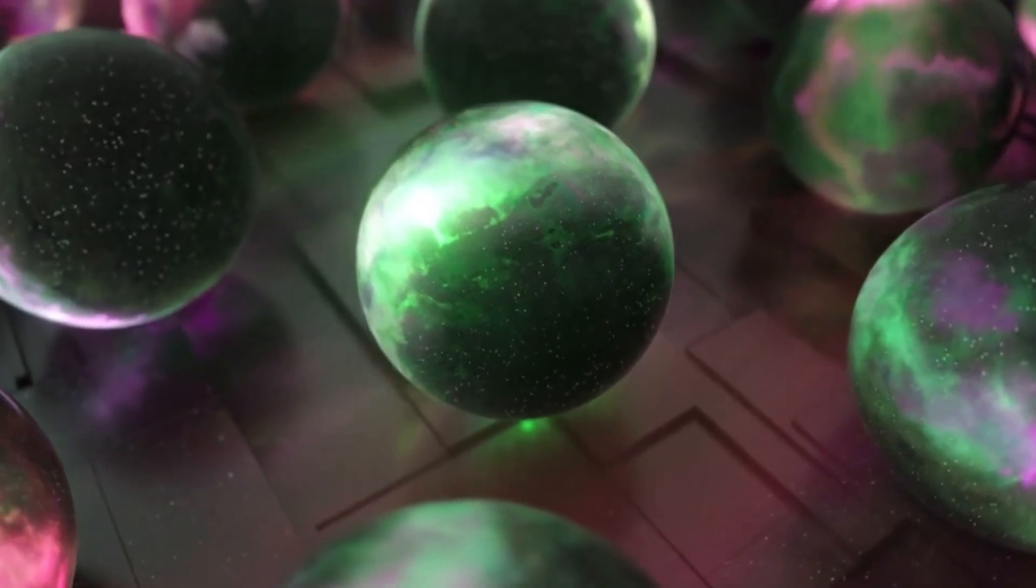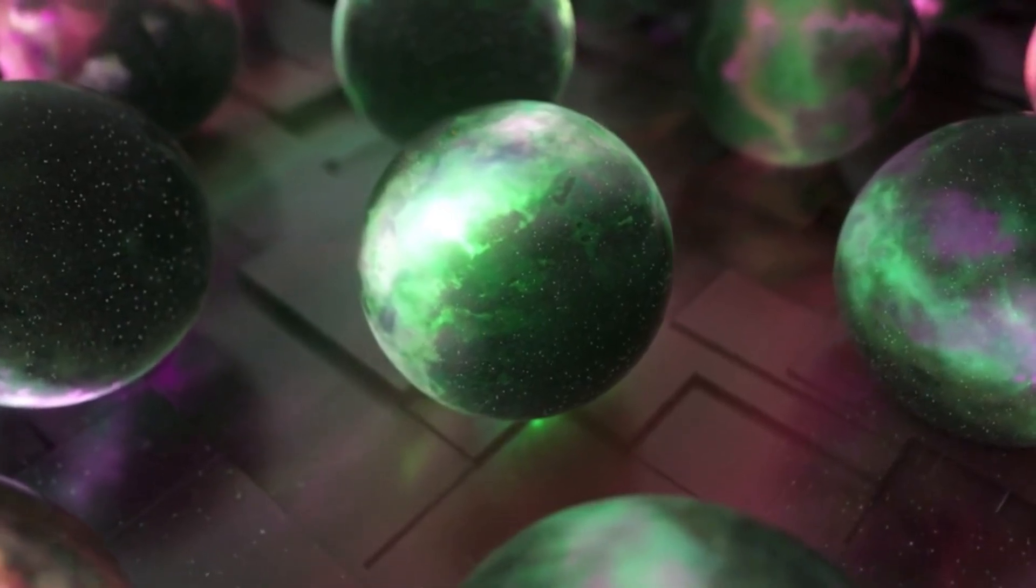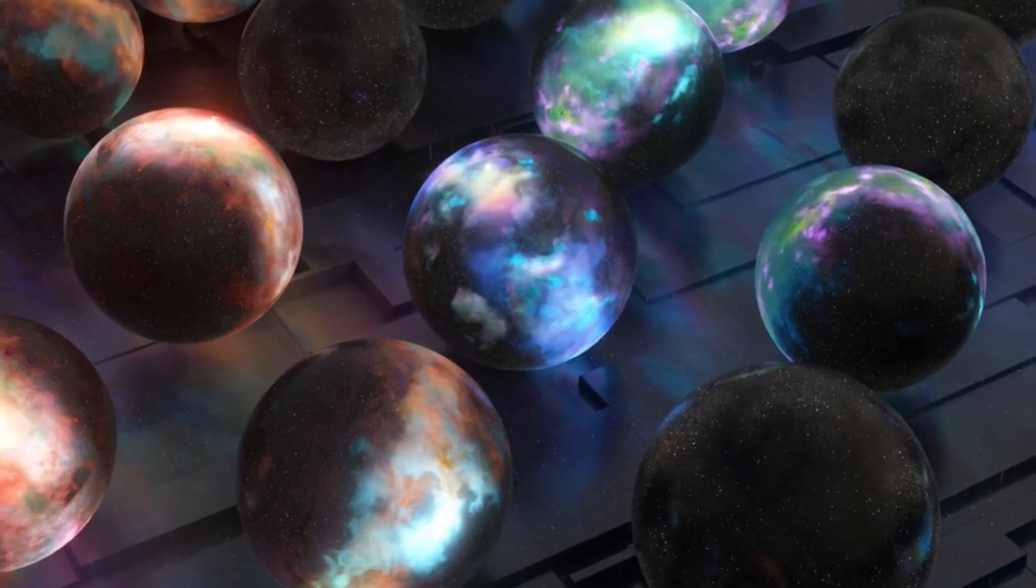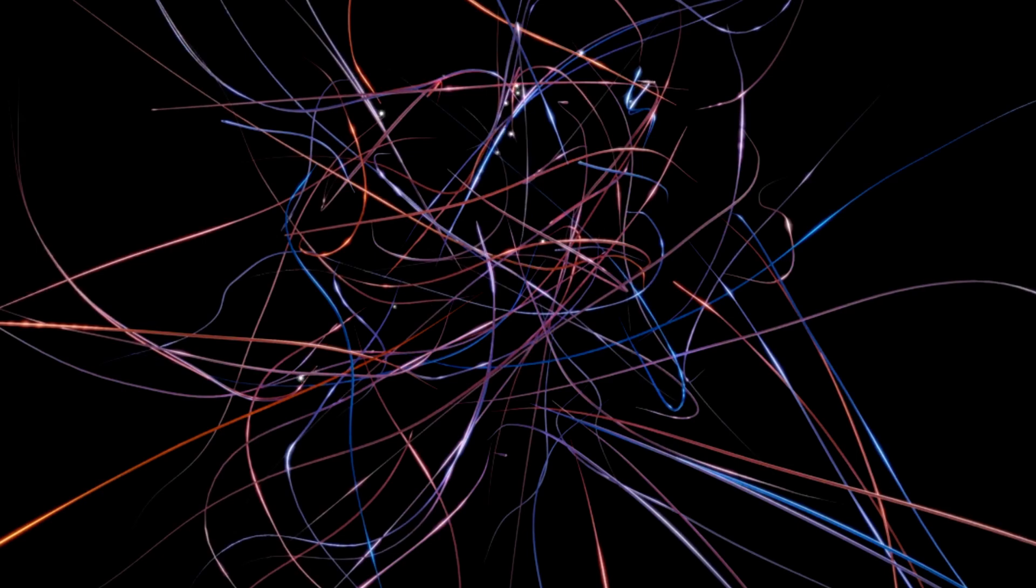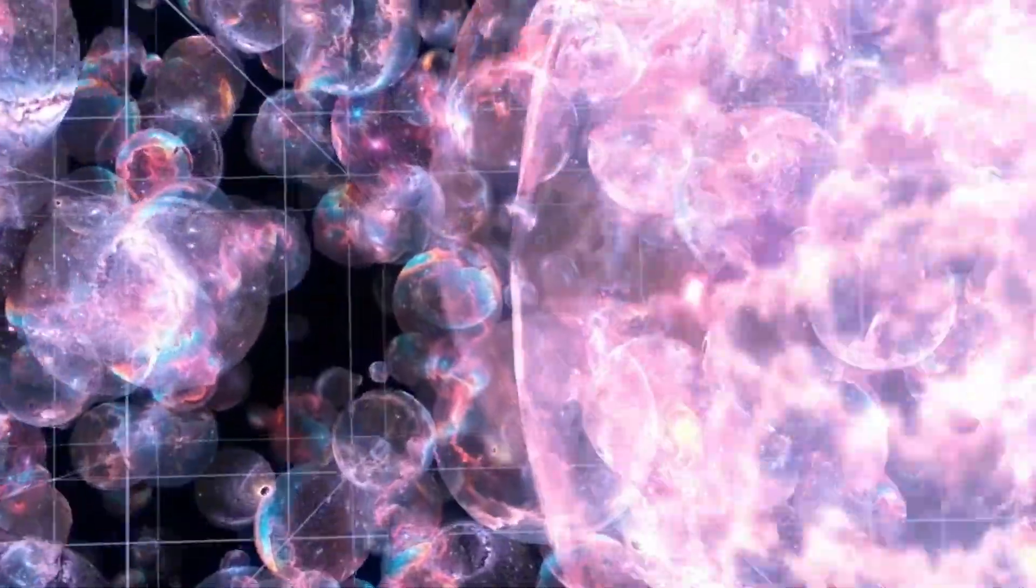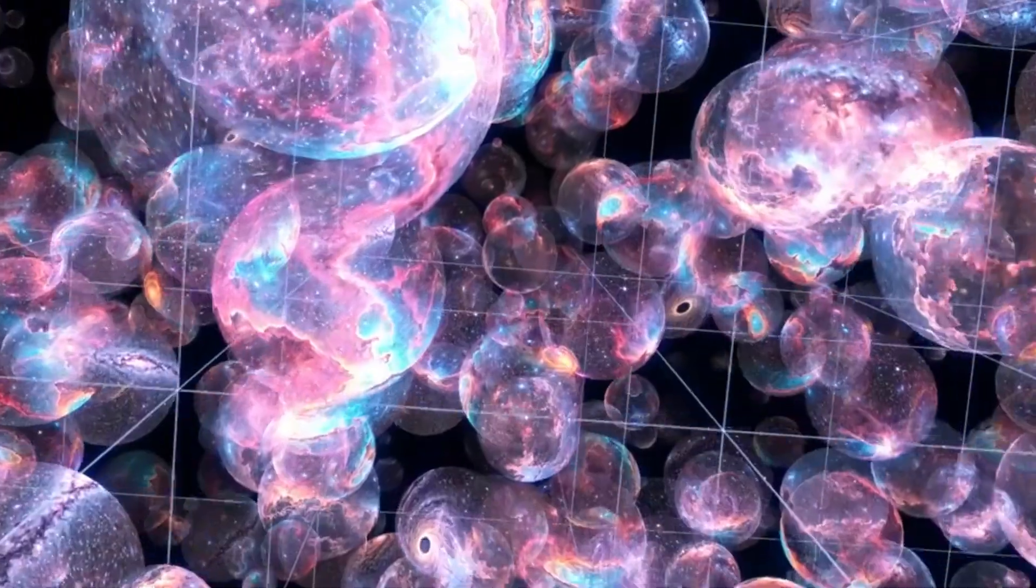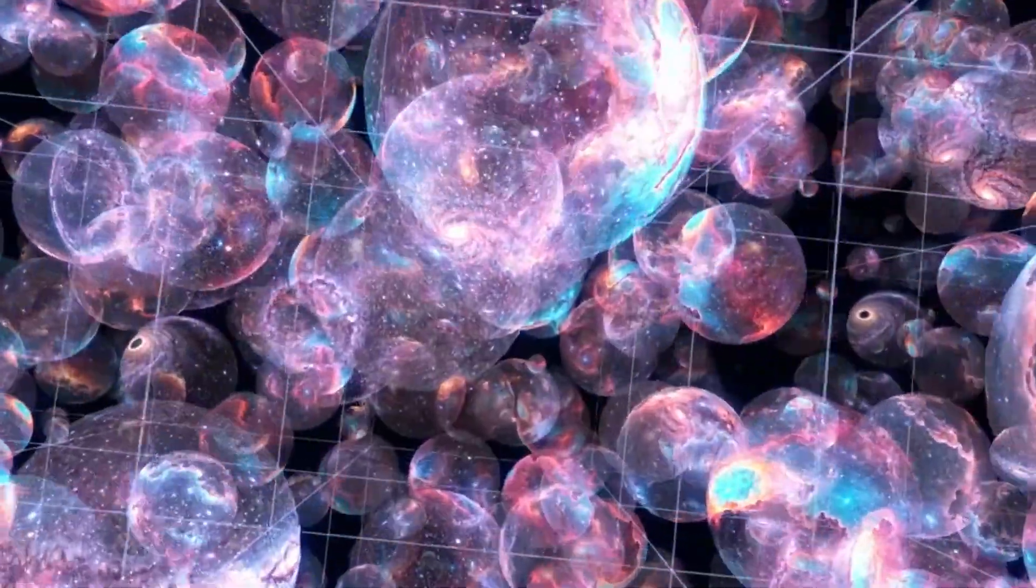A closed universe, on the other hand, would be curved like the surface of a sphere. In this scenario, the universe is finite, but without edges, much like how you can travel indefinitely on the surface of a globe. This curvature would cause parallel lines to eventually converge, and triangles would have angles summing to more than 180 degrees. The third possibility is an open universe, shaped like a saddle. In this case, space would also be infinite, but it would curve in such a way that parallel lines would diverge, and triangles would have angles adding up to less than 180 degrees.